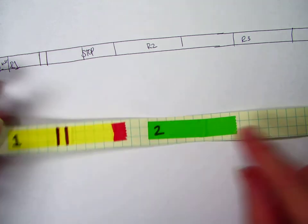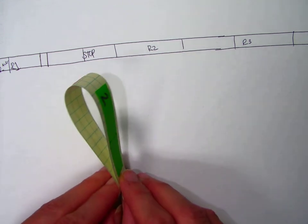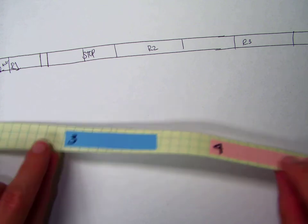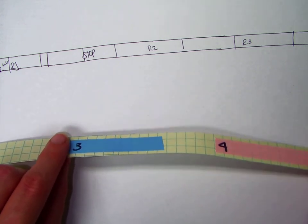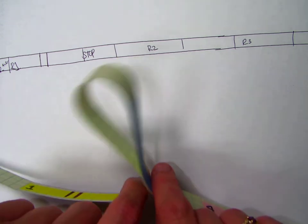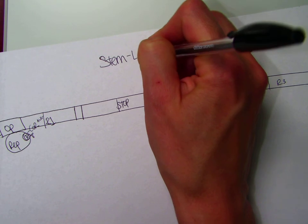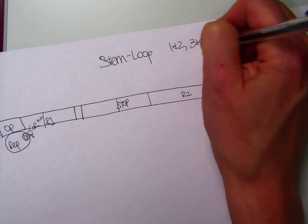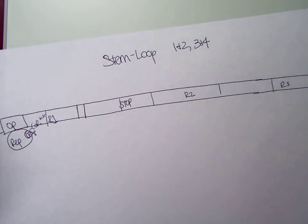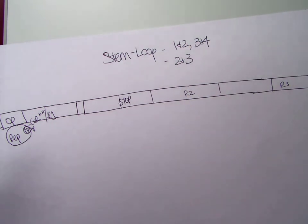All right, so it's important to realize that region 1 and region 2 have complementary inverted repeats, so it's possible for them to stem loop. Region 2 and region 3 also have complementary inverted repeats, so it's possible for them to stem loop. So our stem loop options is 1 and 2, in which case we would also have 3 and 4, because we can't have 1 and 2 and 2 and 3 at the same time. So we can have 1 and 2 and then 3 and 4, or we can have 2 and 3.